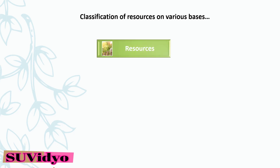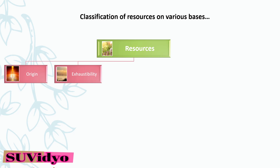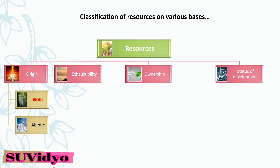We have taken four bases for classifying resources. The first one is origin, second is exhaustibility, then ownership, and then status of development. According to origin, resources can be biotic and abiotic. According to exhaustibility, resources can be renewable and non-renewable.